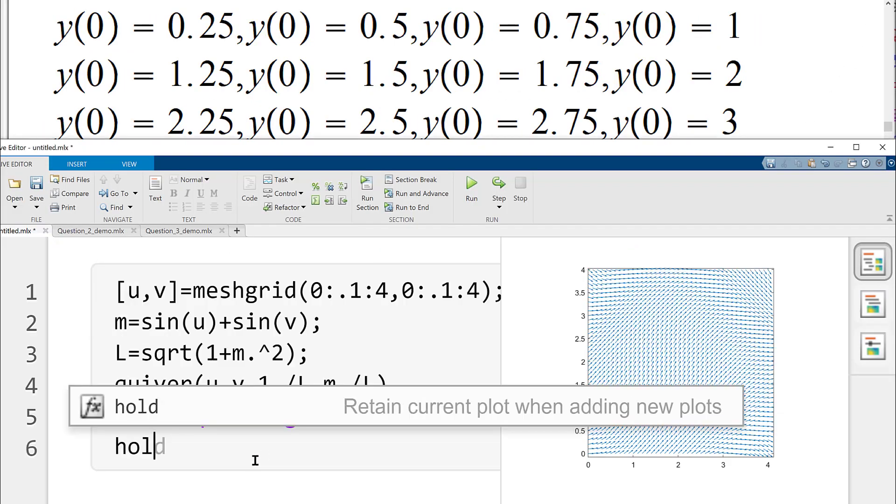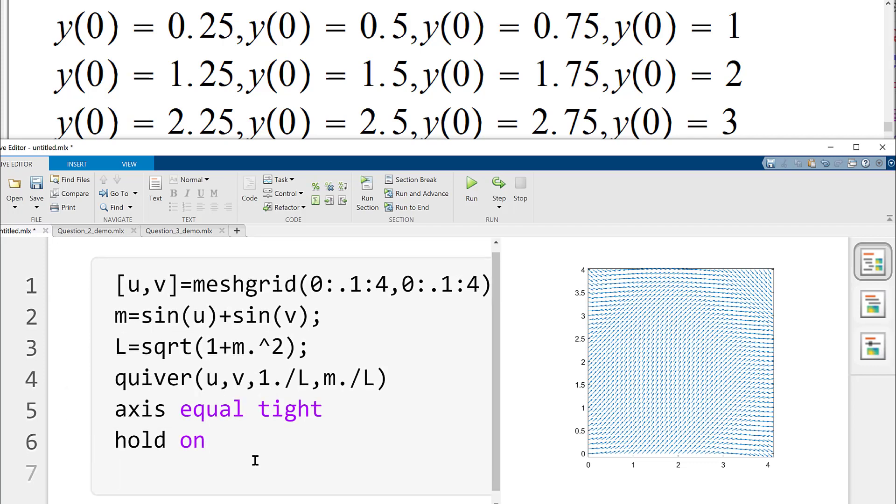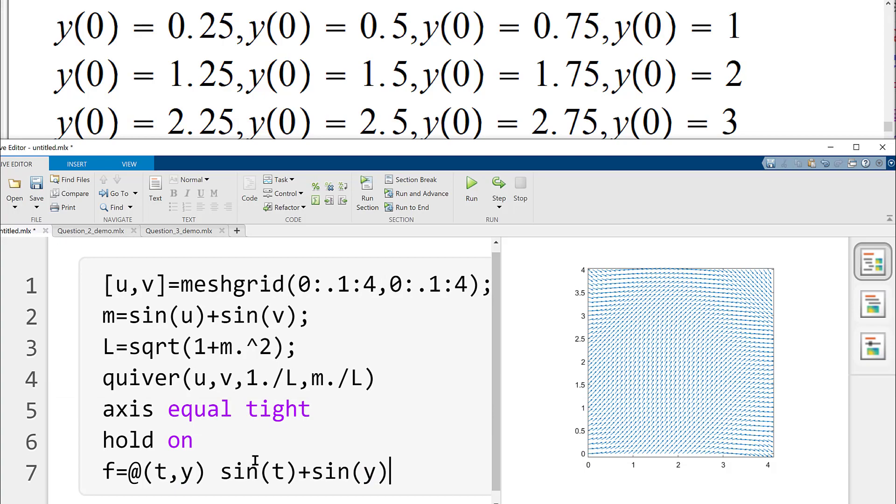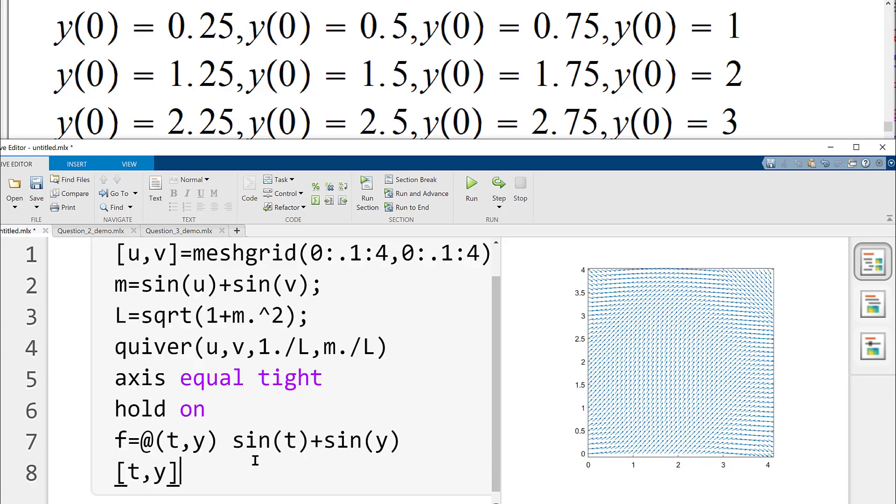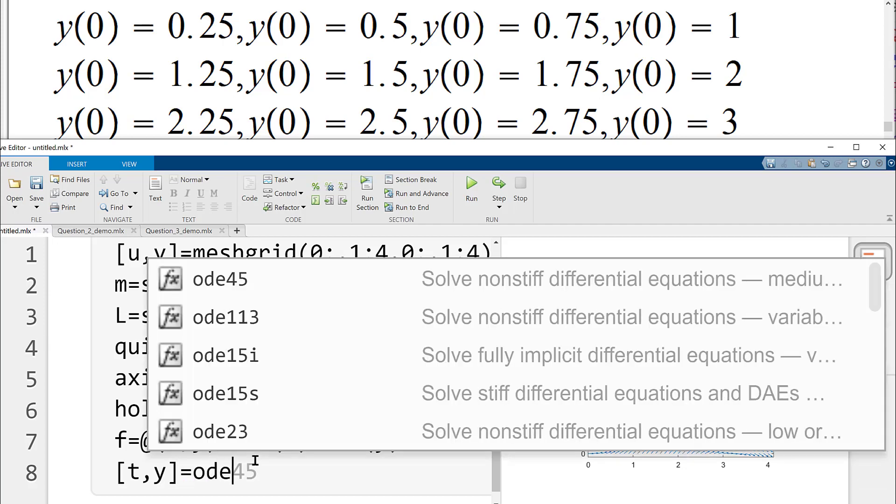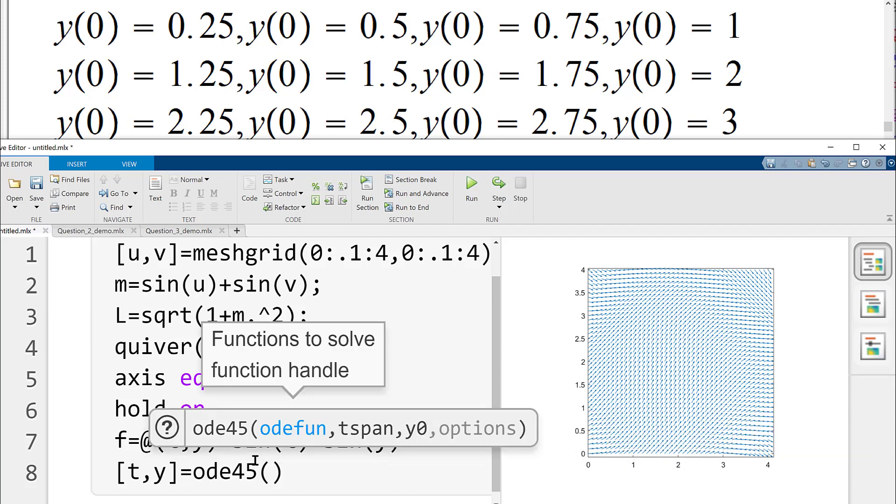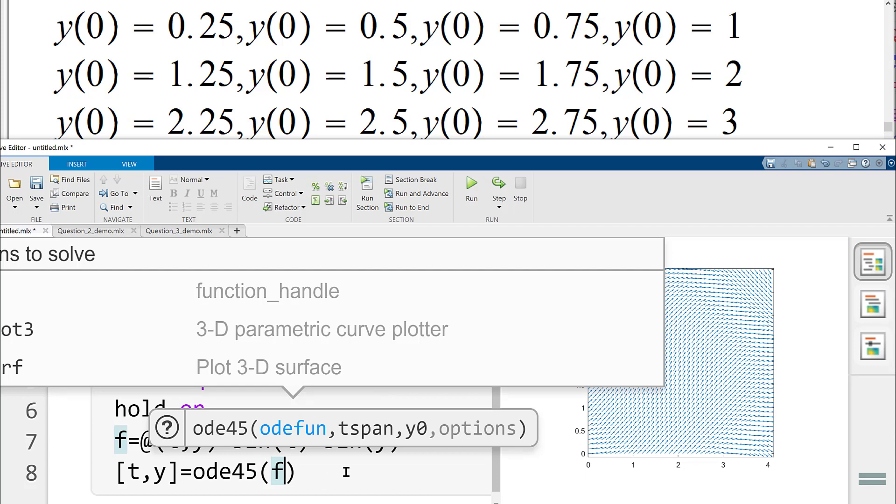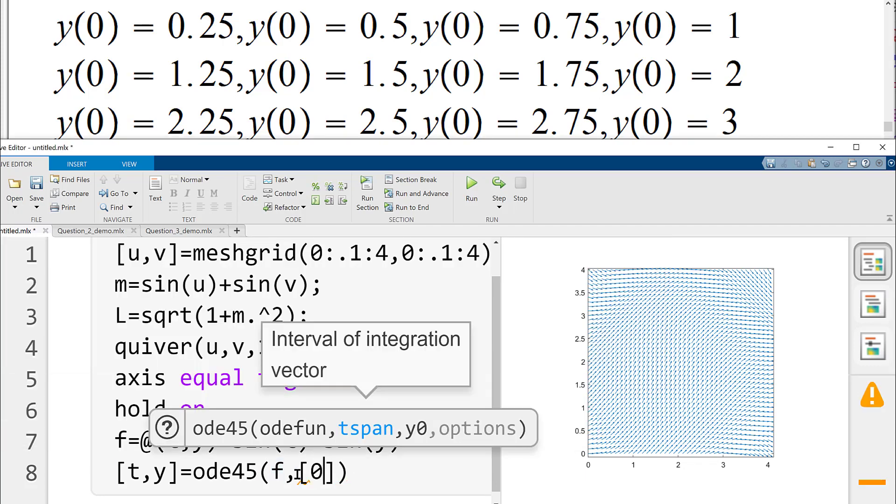So now, first I will ask it to hold on to the graph because we want the solutions on the top of the slope field. And then what we would do, we will define a function handle. And remember, for all these terminologies, I have posted the previous videos. So this is @(t,y). And our function is what? sin(t) plus sin(y). And then we are going to define the pair [t,y] by this, that is this approximation created by this ODE45.